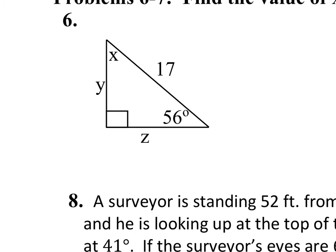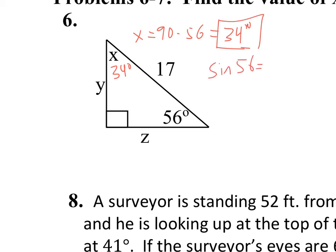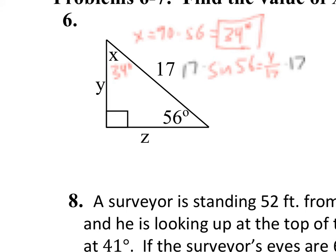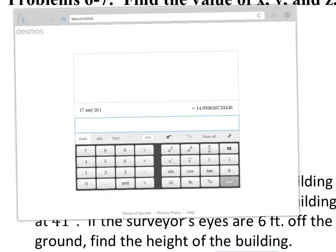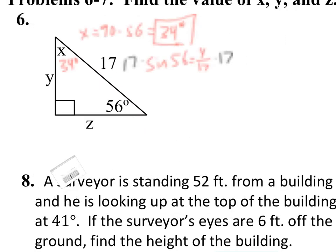Now let's find some angles and sides. First, this angle just adds up to 90, so X equals 90 minus 56, which is 34 degrees. Then we can use sine: sine of 56 equals Y over 17 — or equivalently cosine of 34. Multiplying both sides by 17 gives us Y equals 14.09.